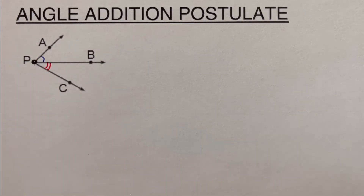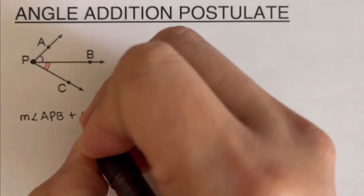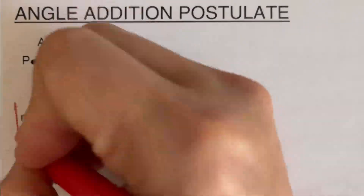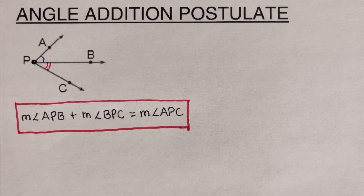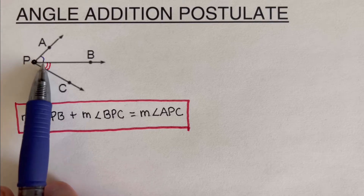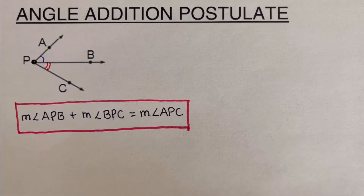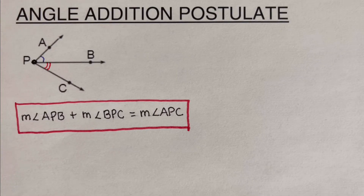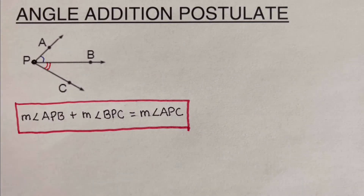I'm going to write that down below. This is what we mean by angle addition postulate. In statement form: the angle addition postulate states that the measure of an angle formed by two angles — the red and the blue — which are located side by side, is the sum of the measures of those two angles.